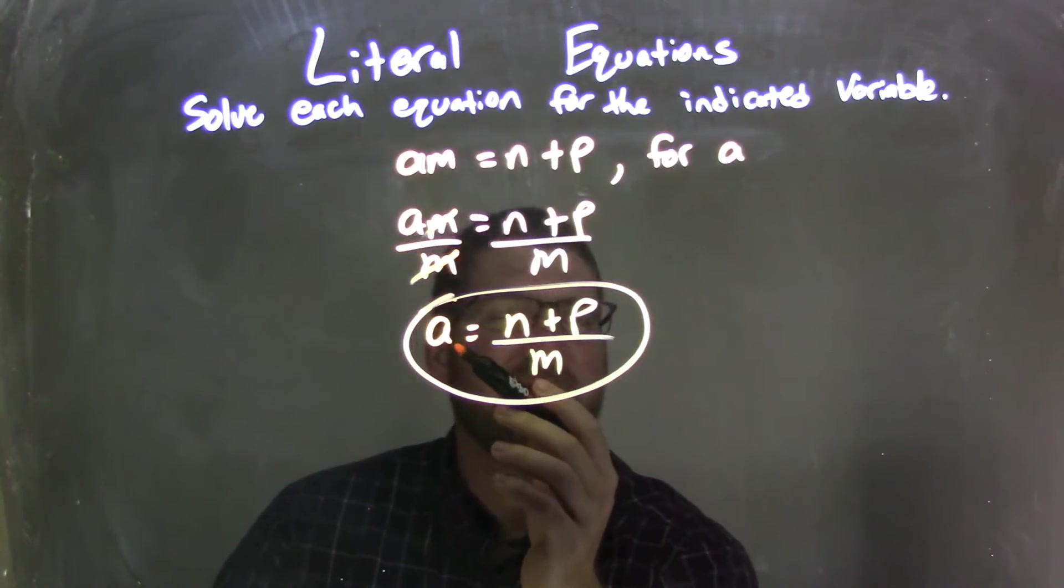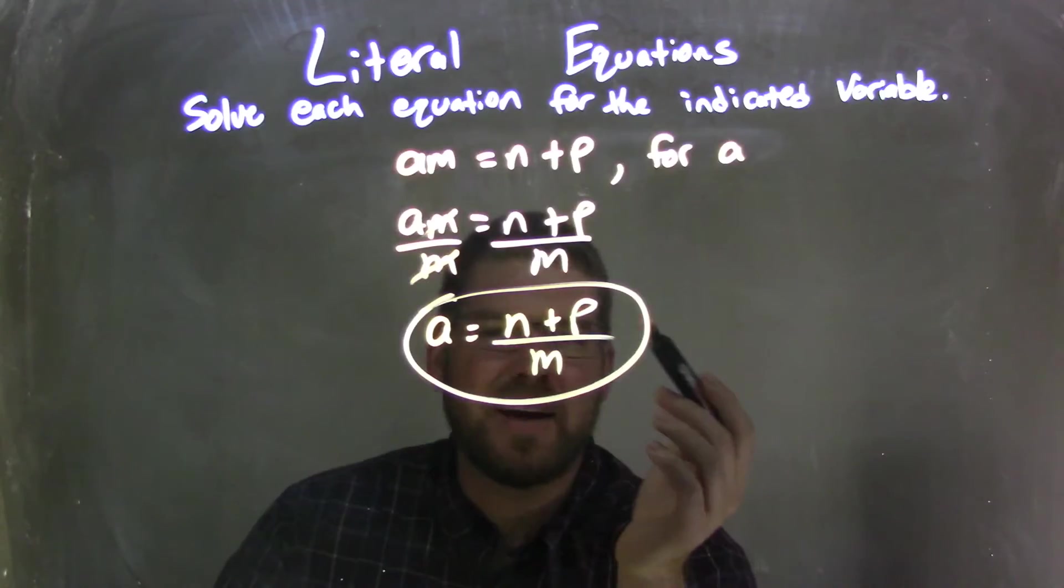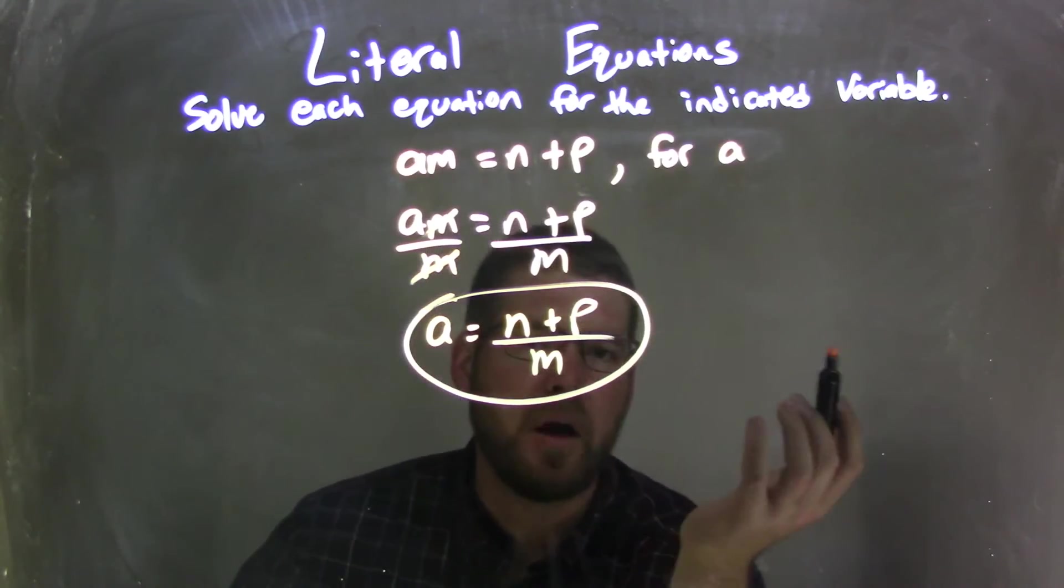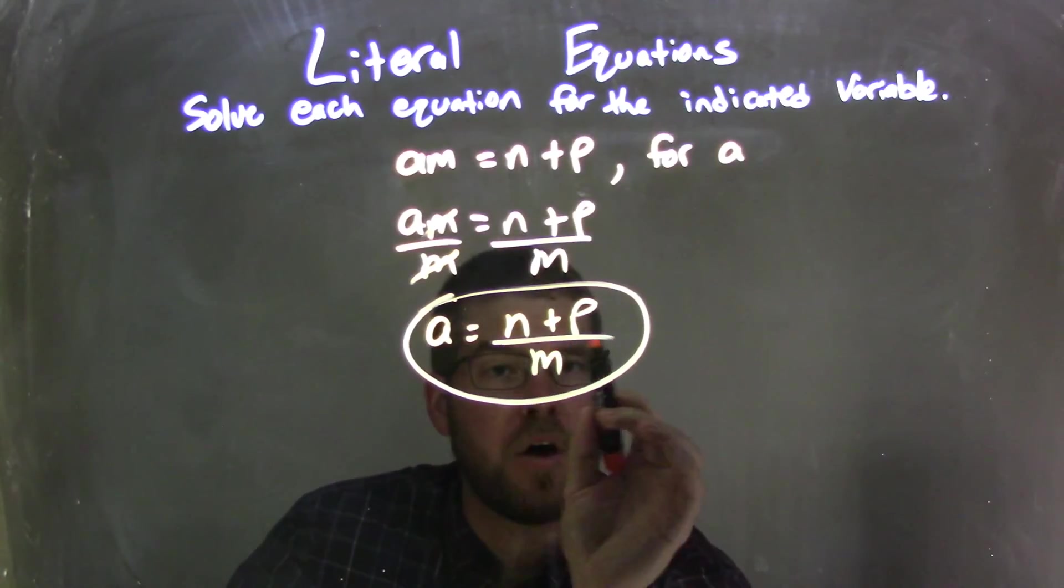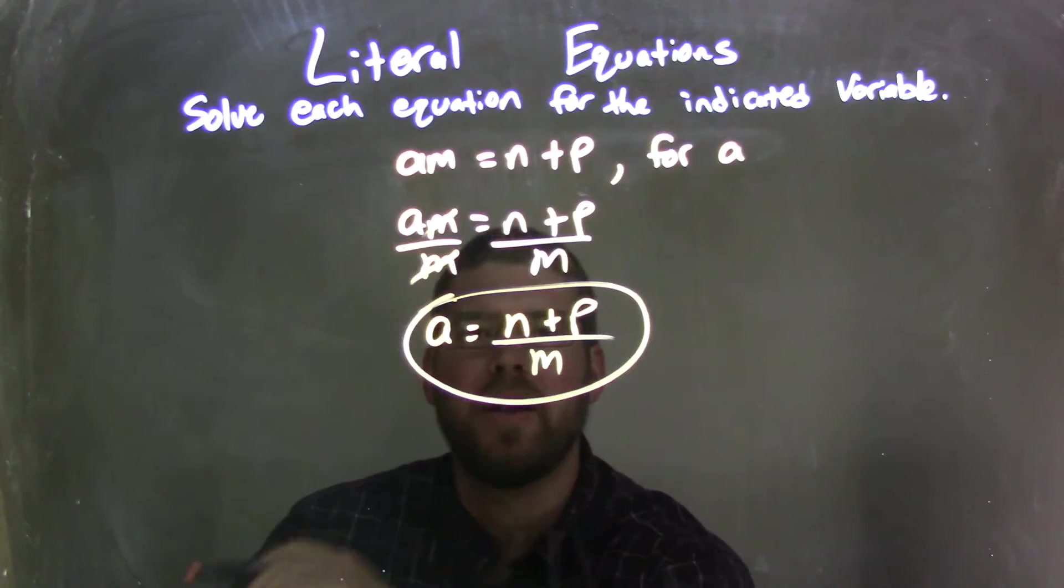Well, since it canceled, a was already isolated, and so there's no like terms to combine, so I was done. And so my final answer here being a equals n plus p all over m, and make sure it's all over that m there on the denominator.